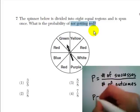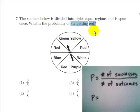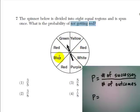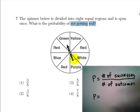So the probability of not getting red. Well, how many ways can we not get red? Well, we see that there's green, yellow, white, purple, and blue. So that's five ways we can not get red.